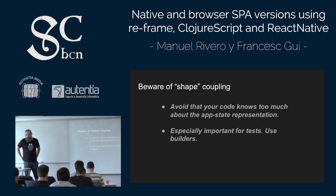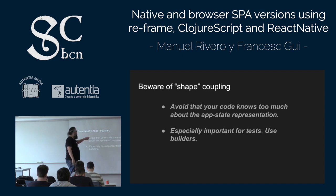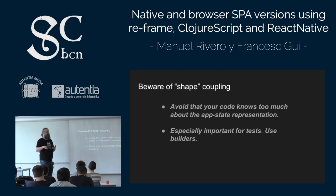Another big problem is shape coupling — something like primitive obsession. You have to make an effort to avoid your code knowing too much about the shape of the app state representation. This is especially important in your tests, so we had to use builders to protect us from that. Okay, getting to conclusions and finishing soon.